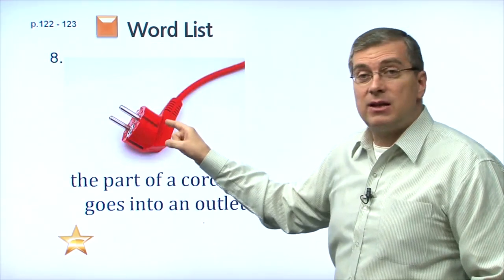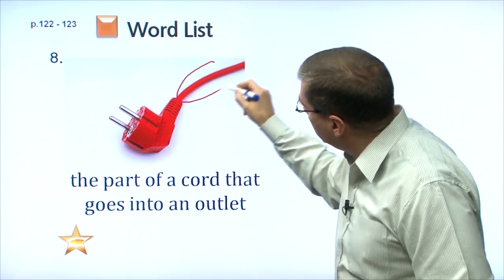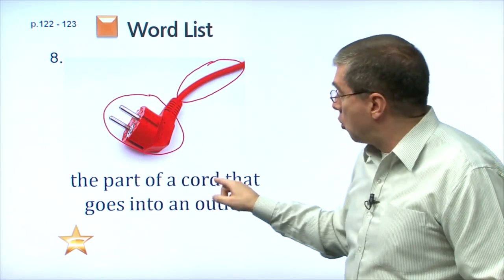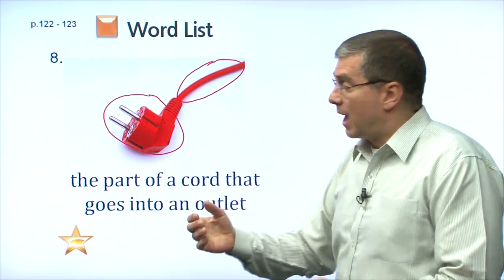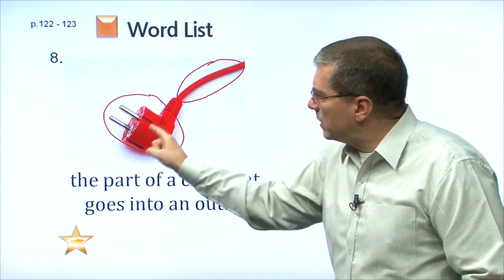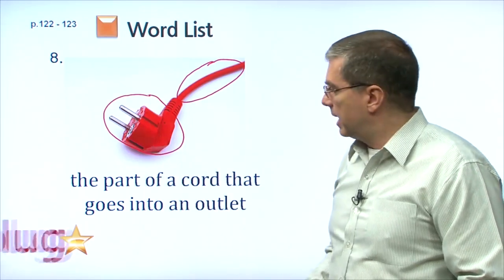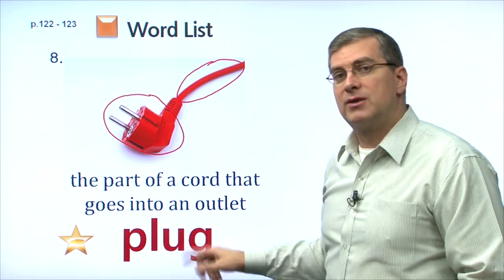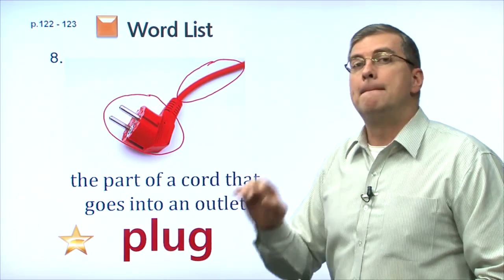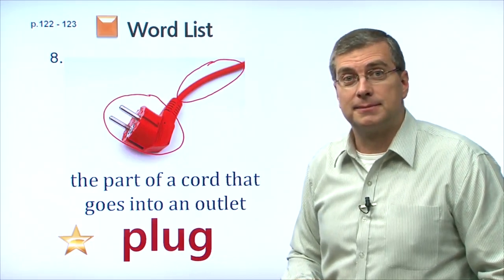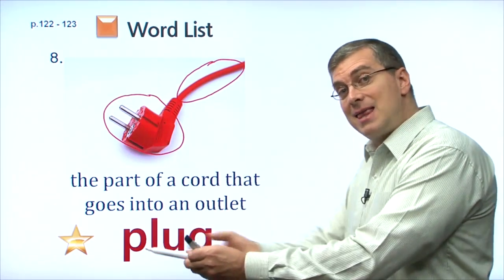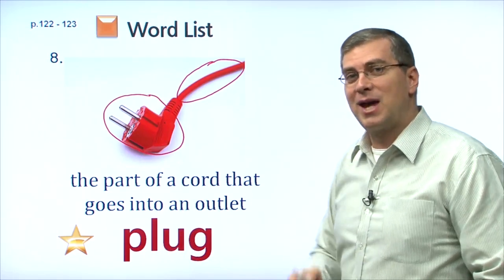Number eight. At the end of the cord — this is the cord here — what is this part that goes into an outlet? You have to connect your cord to your outlet to get the electricity out. What do we call this part? We call this part a plug. Plug. Let's practice that. We have a blend: P and L. Plug. So we use this plug — we put it into the outlet and then we can get our electricity.